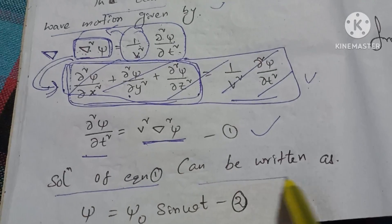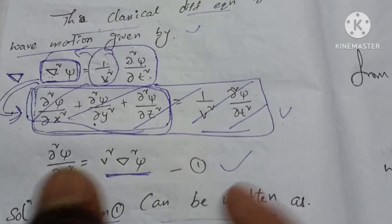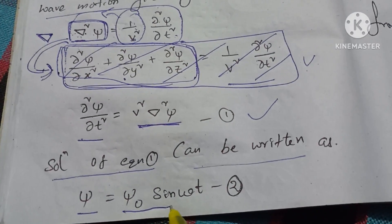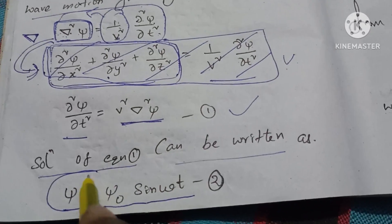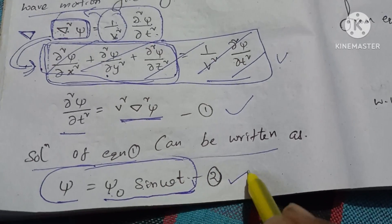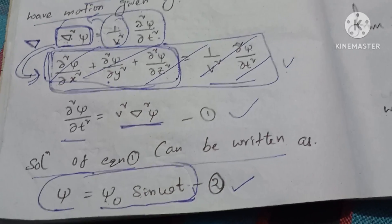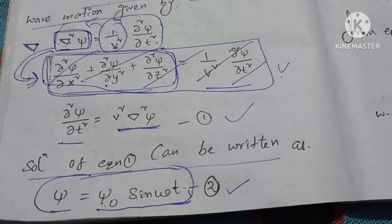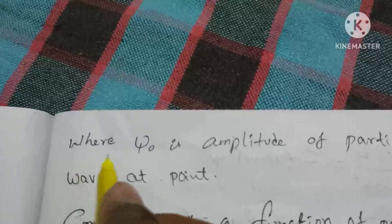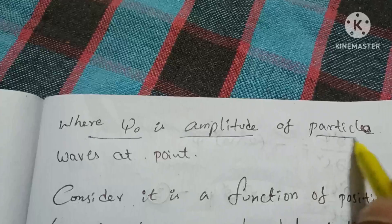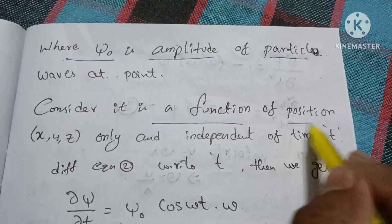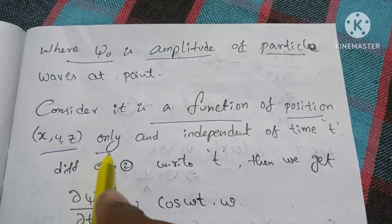The equation can be written as: the solution will vary. Psi is equal to sin(art)·sin(ωt). Here, sin(art) is the amplitude of the particle. It is a function of position x, y, z only, and is independent of time t.